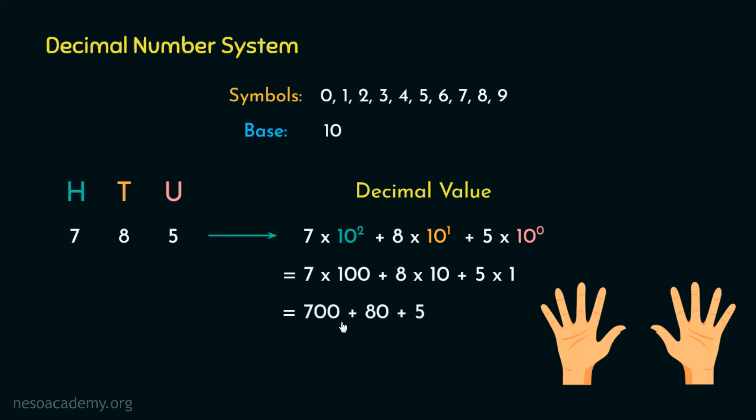So we have got 7 into 100 plus 8 into 10 plus 5 into 1. So 700 plus 80 plus 5, so the decimal value is 785. Well, since it is in decimal, and the base of the decimal number system is 10, we will write it like this.